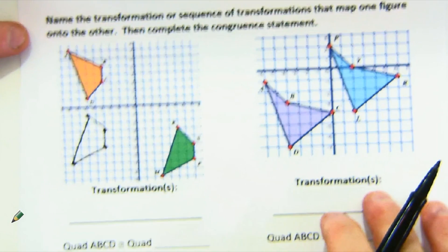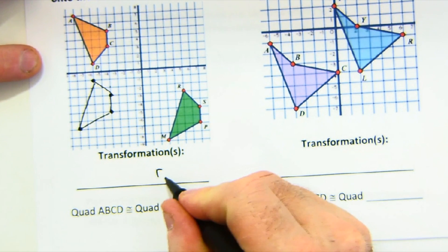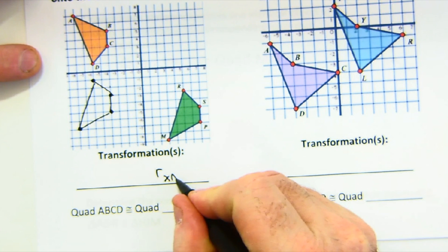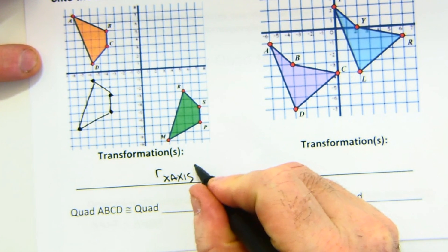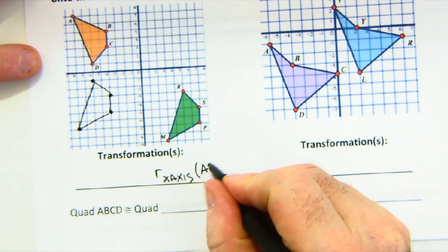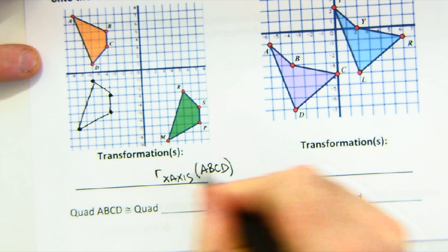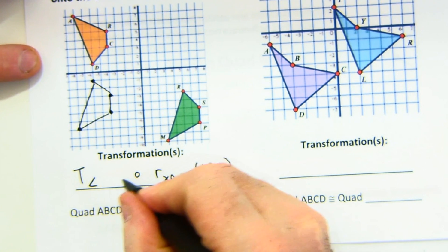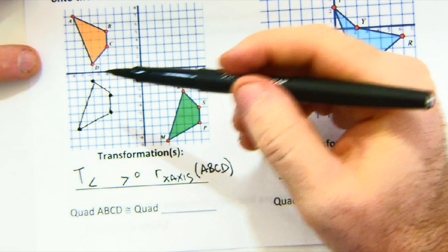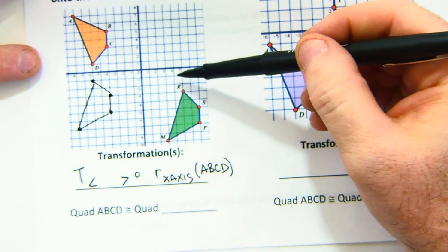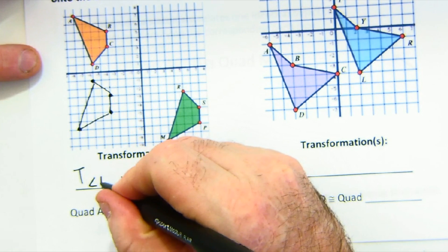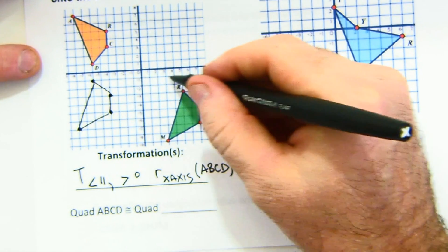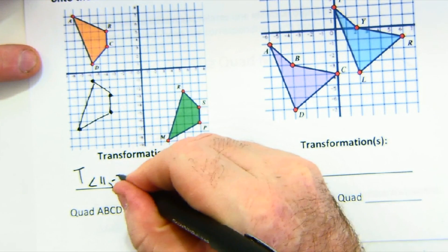So I would do a reflection over the x-axis first of my quad ABCD. And then I would do a translation. Now let's do a quick count here. I'm at negative six, and I need to get to five, so that's 11 to the right. And then I need to go down two from the looks of it.